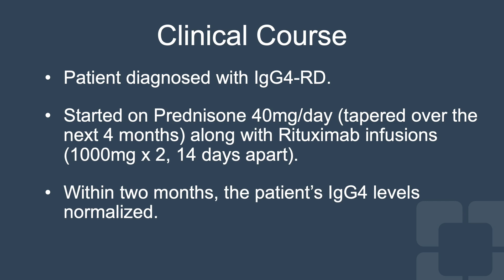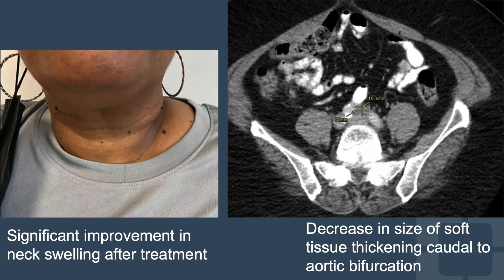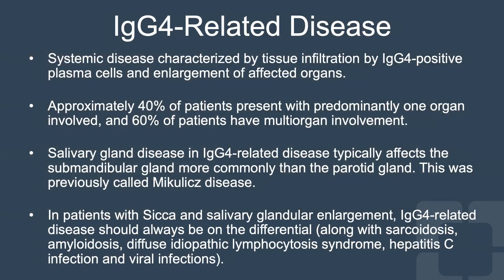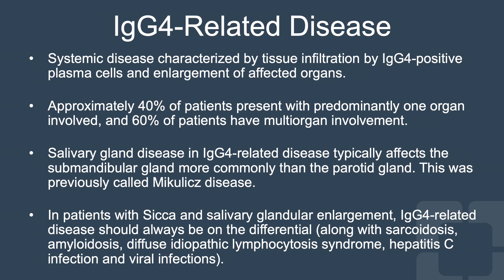Within two months, the patient's serum IgG4 levels normalized. She experienced significant improvement in neck swelling, and CT abdomen demonstrated decrease in size of soft tissue thickening caudal to the aortic bifurcation.